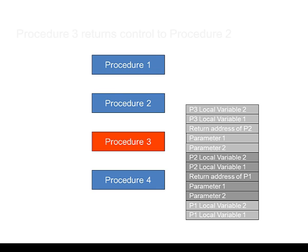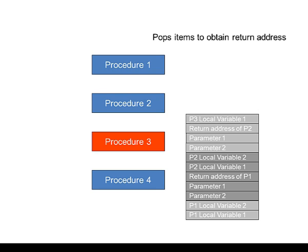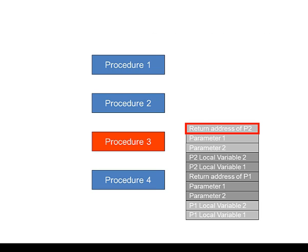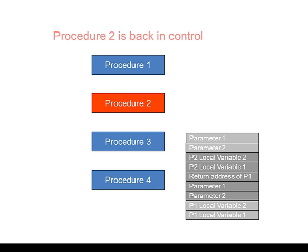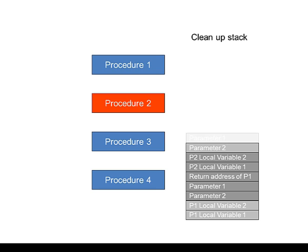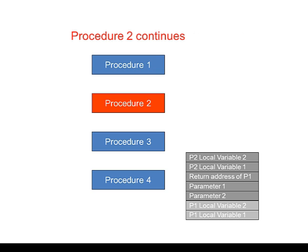When Procedure 3 returns control to Procedure 2, we see the same again. Any local variables are popped off the stack, which allows Procedure 3 to pop the return address off the stack, and Procedure 2 is back in control. Procedure 2 cleans up the stack and continues from where it left off.